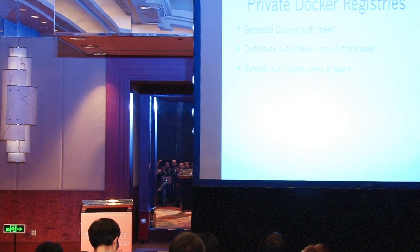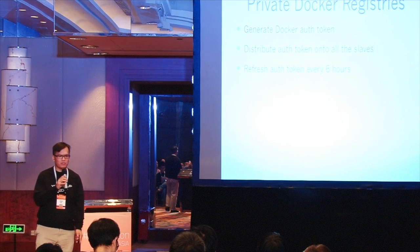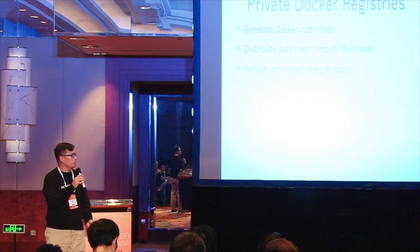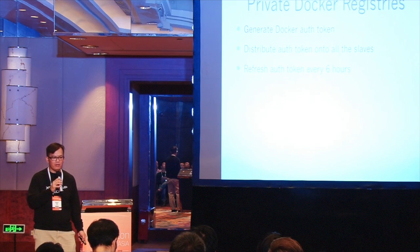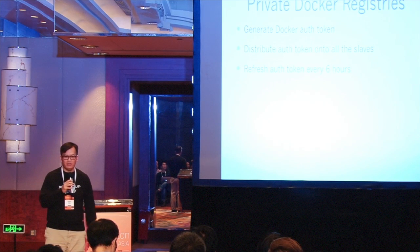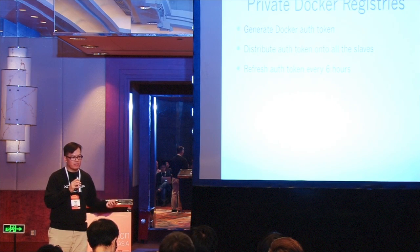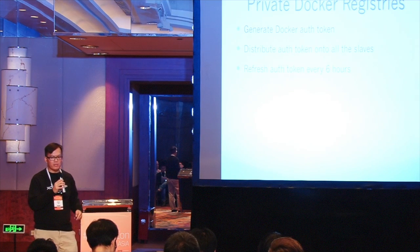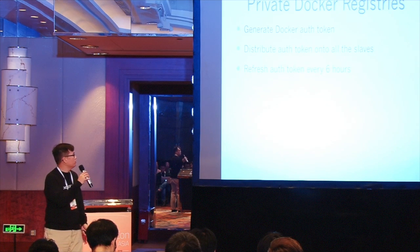Private Docker registry. We use Amazon ECR, which is a private Docker registry. If you use Docker Hub private repos, you'd have the same issue in terms of having to distribute this Docker authorization token. There is an authorization token that needs to go on to all your slaves where your containerizer is running, in order for you to be able to log in to these private Docker repos.